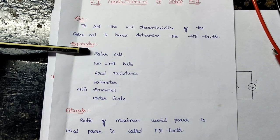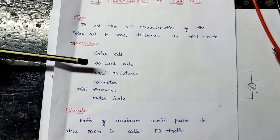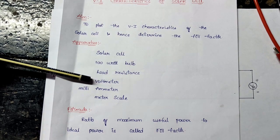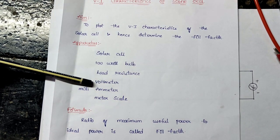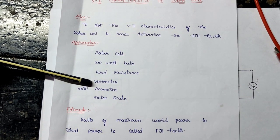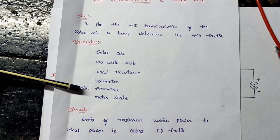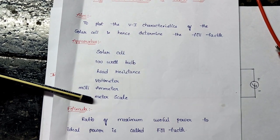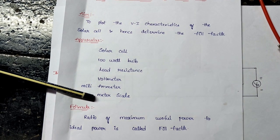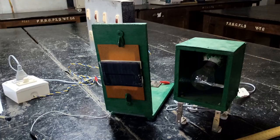The apparatus required for this experiment are: a solar cell, a 100 Watt bulb, a load resistance, a voltmeter to measure the voltage, a milliammeter to measure the current, and a meter scale to measure the distance. I am now going to actually show these apparatus to you.